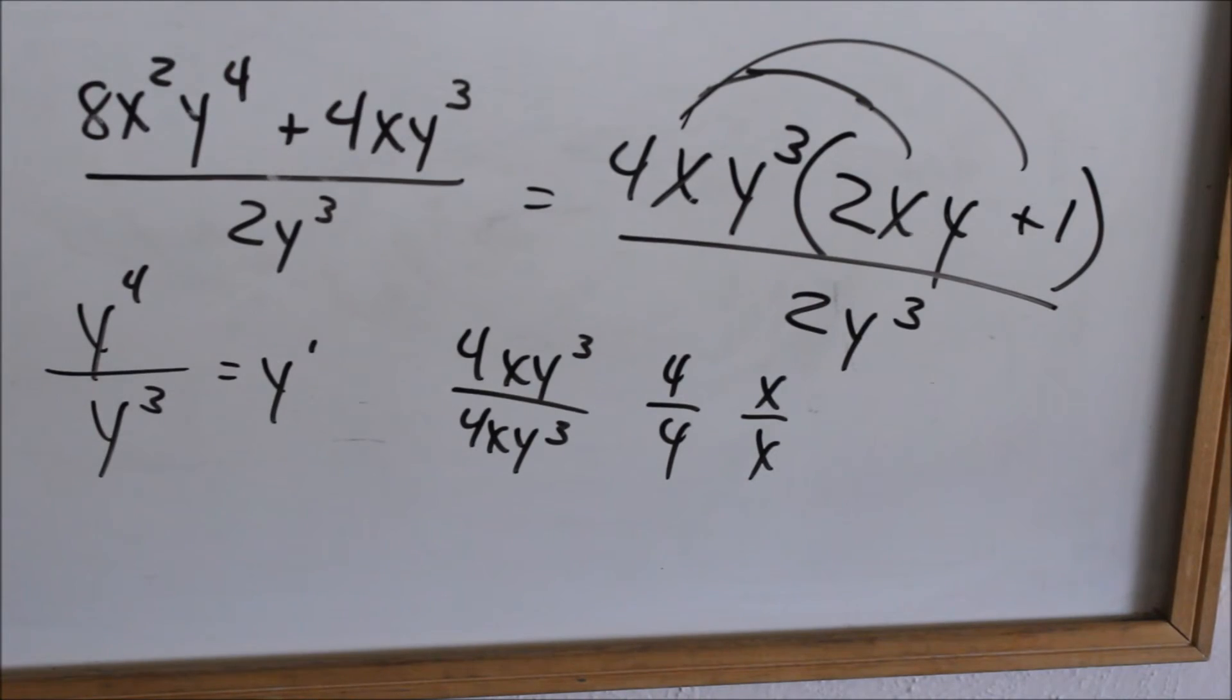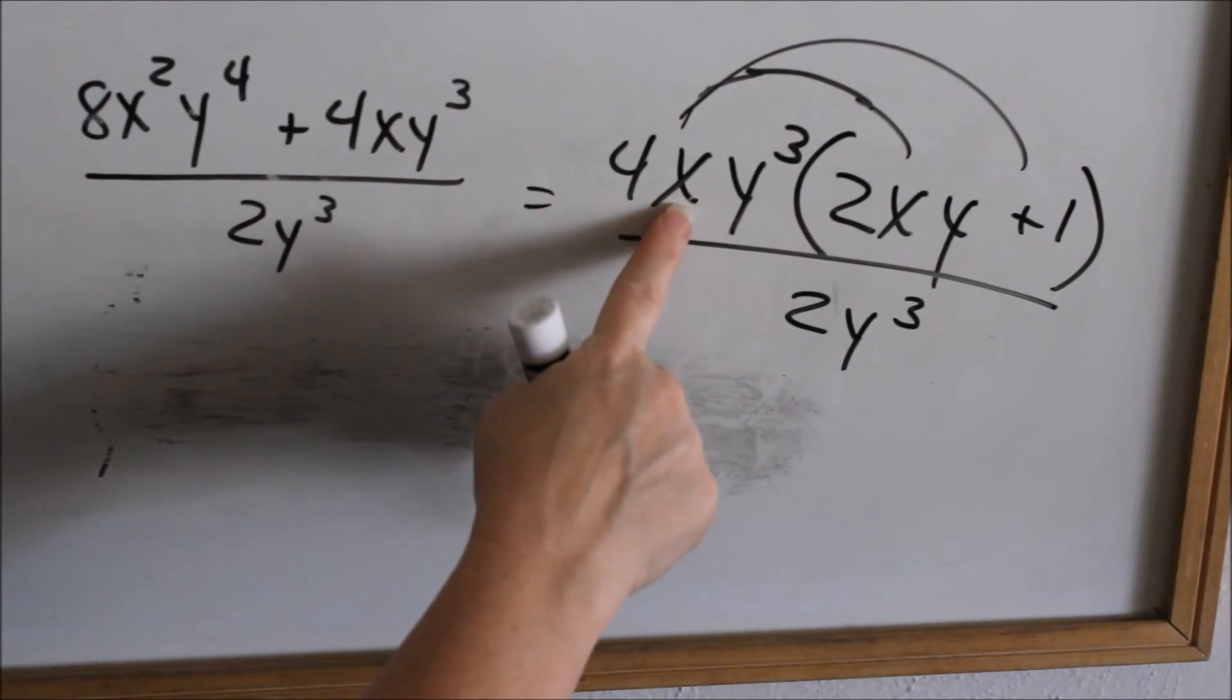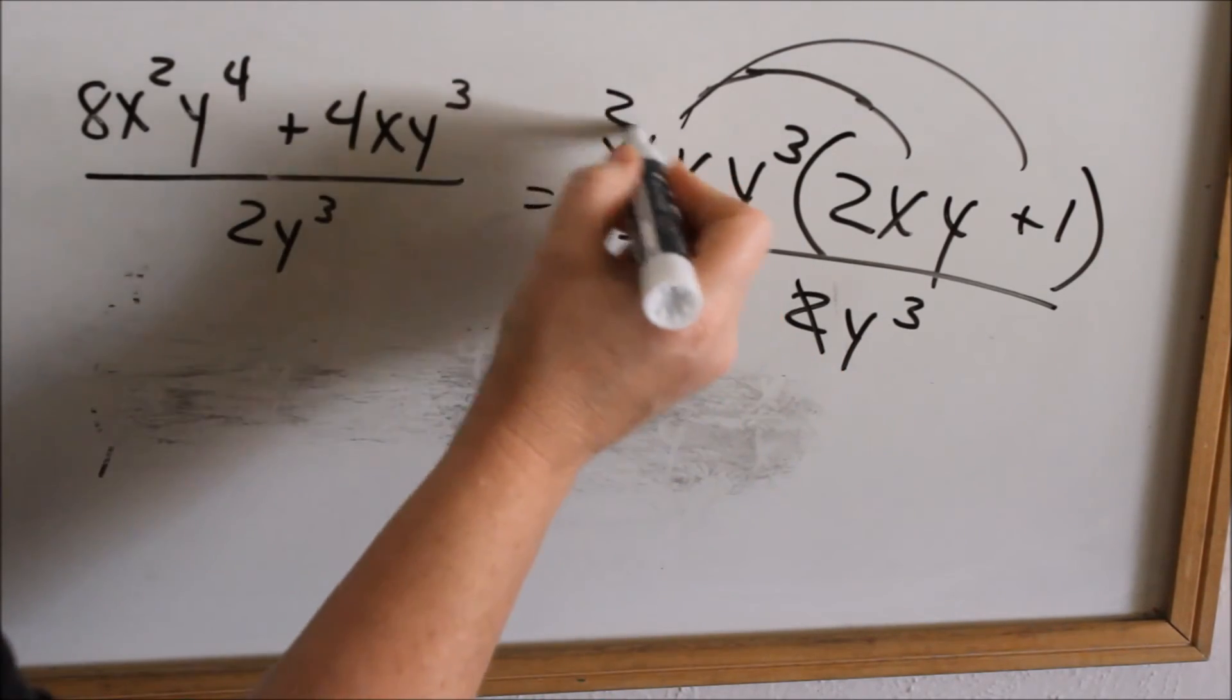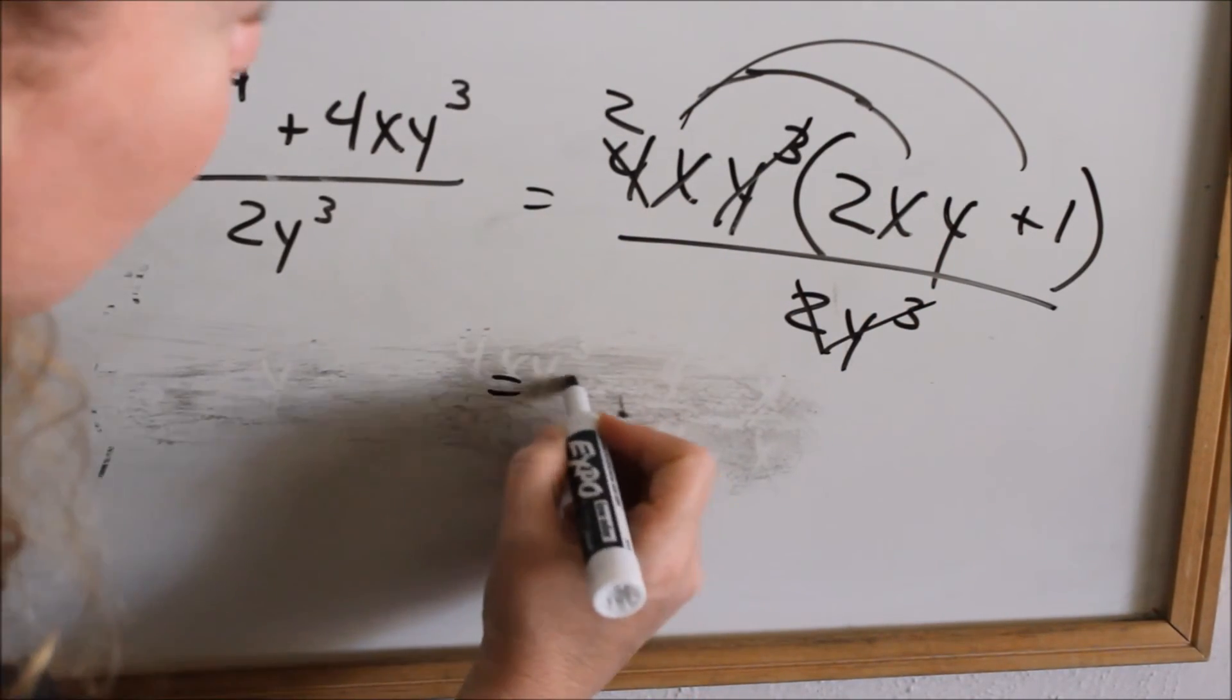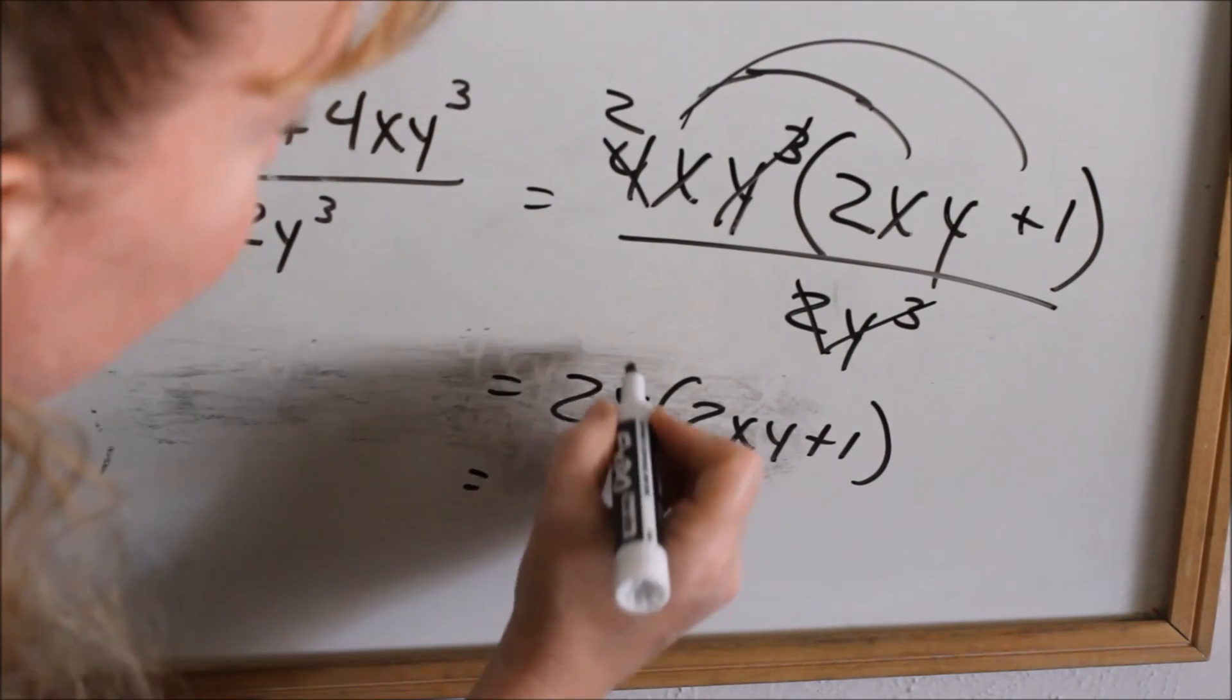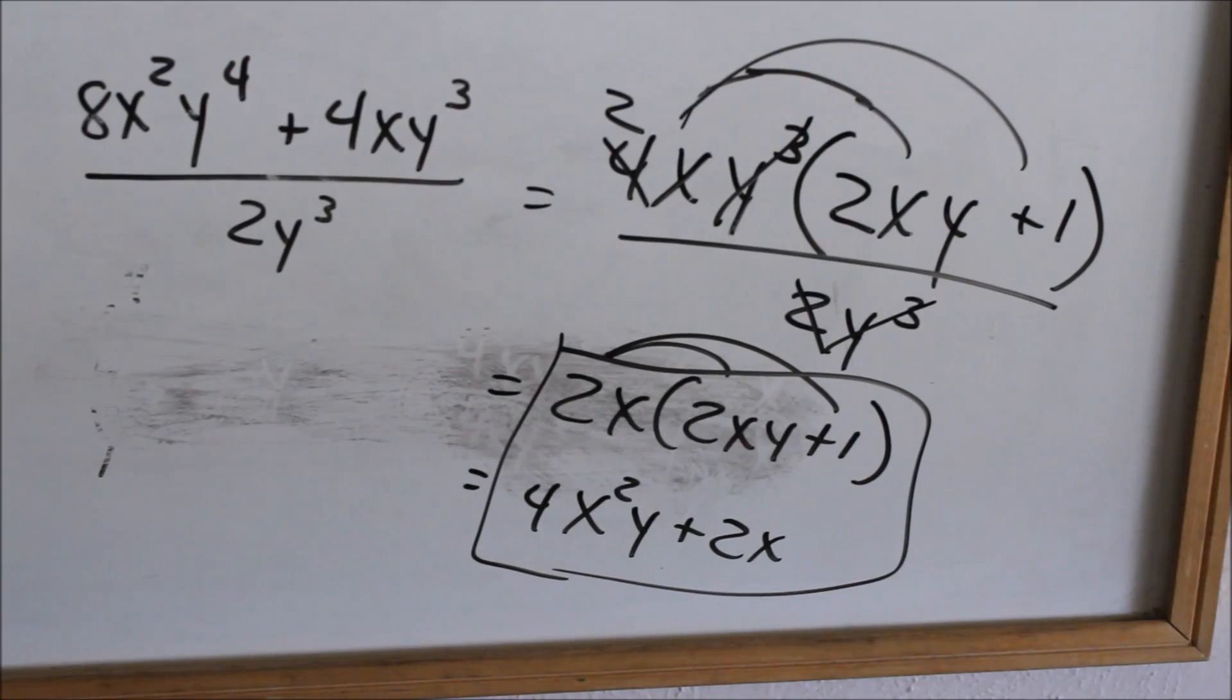Now we are ready to cancel. We can cancel now because all of this is multiplied in this parenthesis. This means 4 times x times y cubed times this parenthesis. This is all multiplied, so we can cancel this with this because it's all multiplied. 2 goes into 4 two times. There's no x's to cancel, but we can cancel our y cubed with our y cubed. So in the numerator, we have 2x times 2xy plus 1. And there's no denominator. That just becomes a denominator of 1. Or you can multiply it out to be 4x squared y plus 2x. Either answer is acceptable.